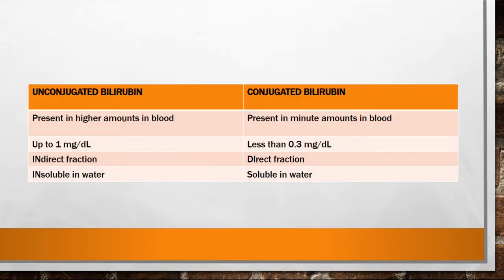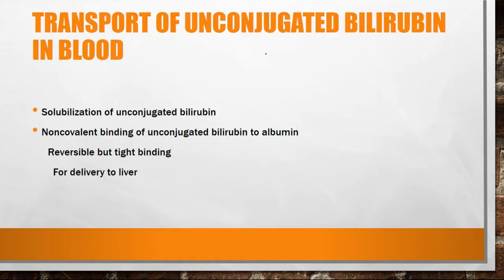The difference between unconjugated and conjugated bilirubin: unconjugated bilirubin is present in higher amounts, generally up to 1 mg/dL, whereas conjugated bilirubin should be less than 0.3 mg/dL normally. Unconjugated bilirubin has an indirect fraction in van den Bergh reaction, and conjugated bilirubin has a direct fraction. Unconjugated bilirubin is insoluble in water, whereas the conjugated one is soluble in water. To remember which is indirect and which is direct, you can use the mnemonic: 'un-in' and 'con-di' — unconjugated is indirect and insoluble; conjugated is direct and soluble.